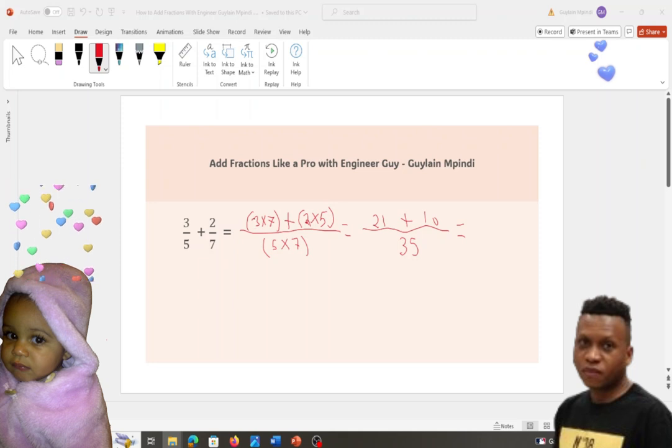3 times 7 plus 2 times 5. So for you to write it down, 2 is this 1, 5 is this 1. So 2 times 5 equals 10.